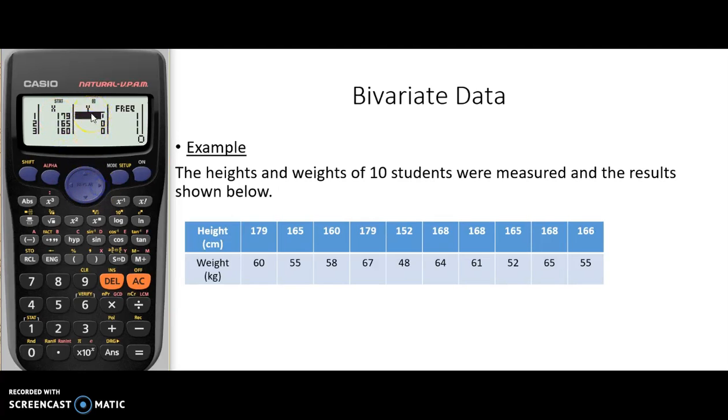Going across to our weight column, let's make sure that 179 lines up with 60. So I put our 60, equals, and it's next to it for our first person. It's important that our heights and weights correlate so they're matching. Our 165 was 55, then 58, and 67, and 48, and 64, and 61, and 52, and 65.